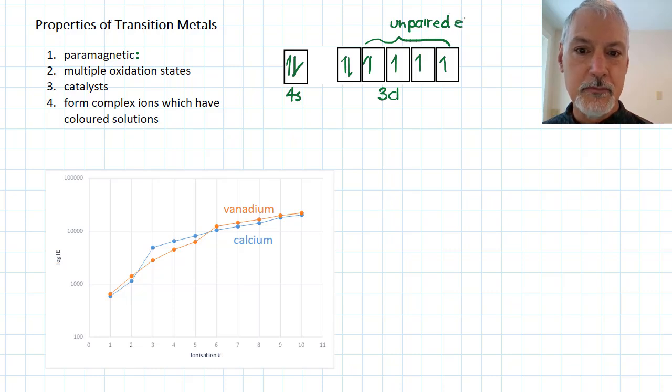The greater the number of unpaired electrons, the greater the paramagnetic properties of the substance. So we can see iron here with four unpaired electrons would be considered to be quite paramagnetic.